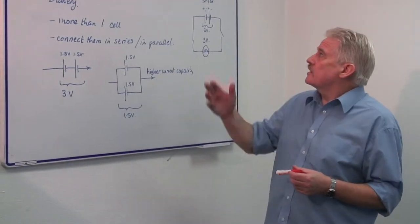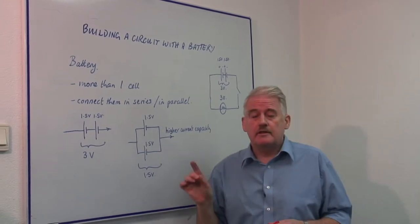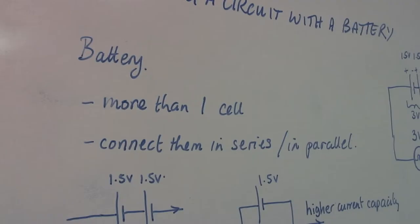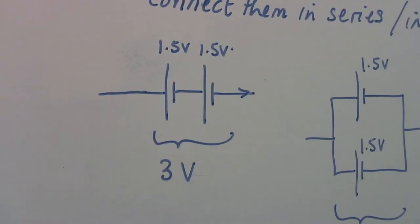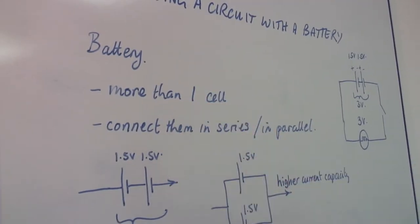Hi, I'm Steve Jones and I'm going to show you how to build a circuit with a battery. This is not with a cell. A cell is a single object, whereas a battery is a collection of cells, a number of cells. This is what makes it distinctive.